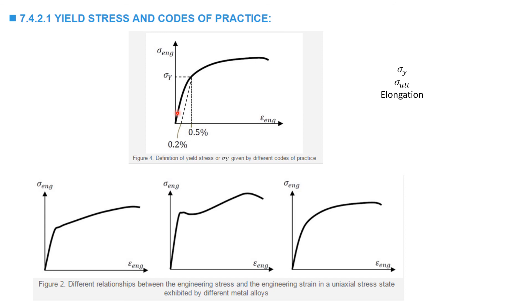The CSA S16, which is the handbook of steel construction, defines the yield stress as that corresponding to the intersection between the stress strain curve and the 0.2% offset to the linear portion.